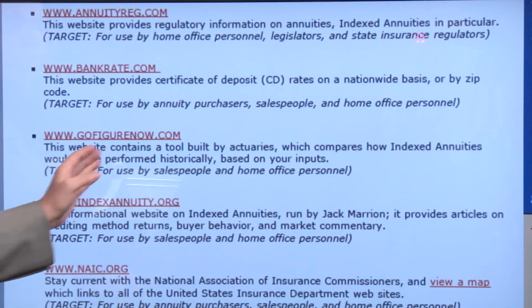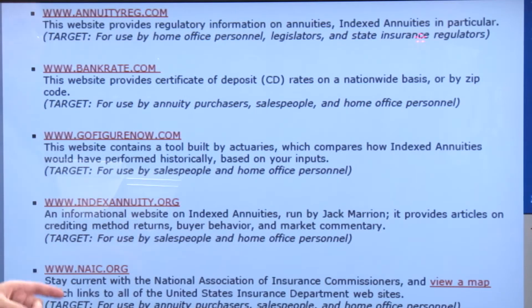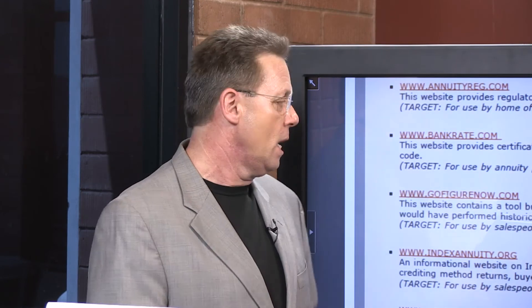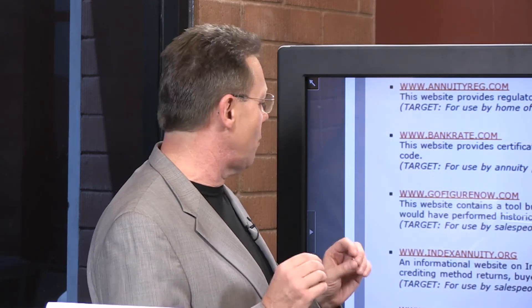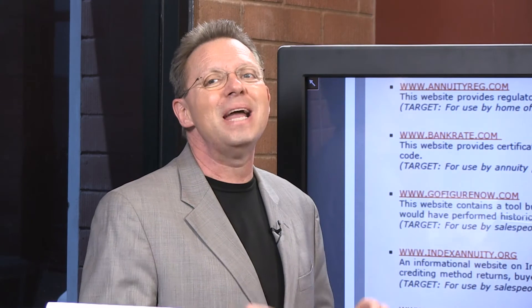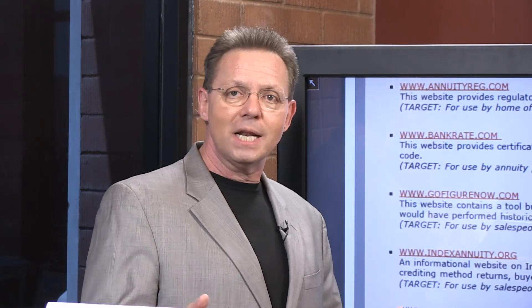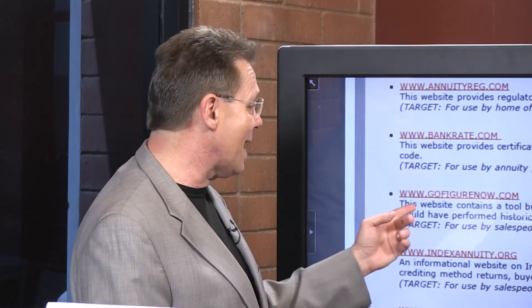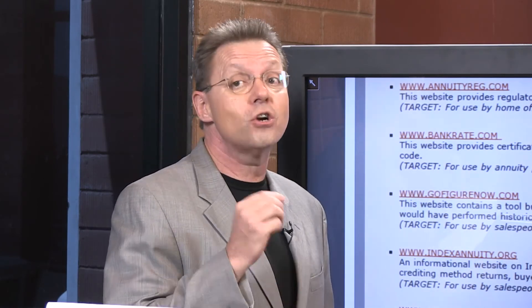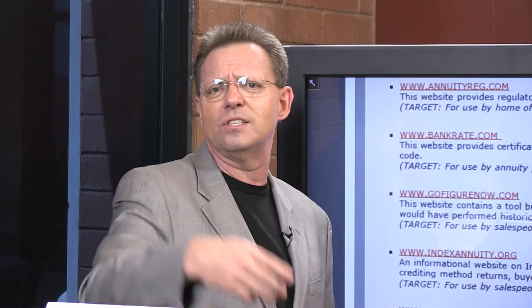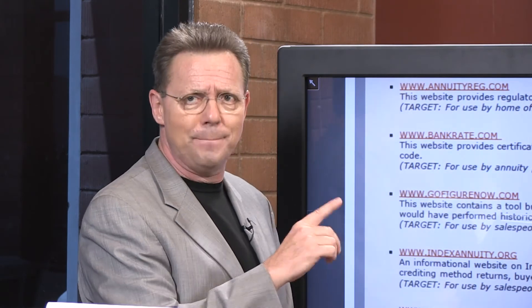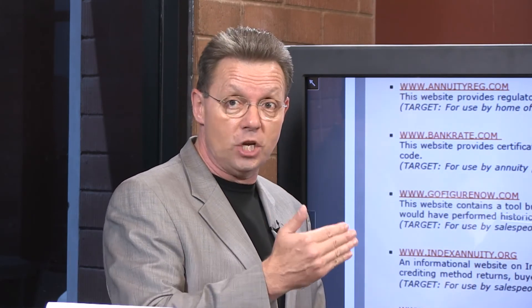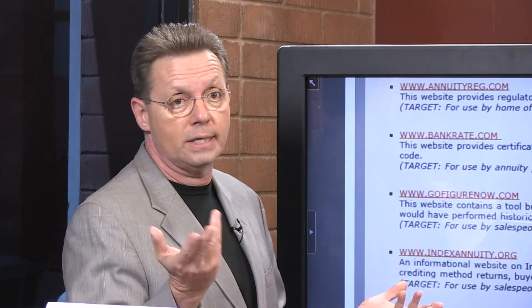Another one I love is gofigurenow.com — a tool built by actuaries. It compares how index annuities would perform historically based on your inputs. If you want to see performance in arrears — similar to 20- or 30-year lookbacks in life insurance or whole life dividend history — go to gofigurenow.com. And if you want this list, just email me at thebiz@brokersalliance.com and I'll send it to you.